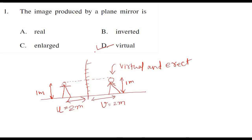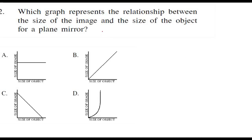Let us move on to the next question. Which graph represents the relationship between the size of the image and the size of the object for a plane mirror? The word 'size' here means height of the image, not volume. In a plane mirror, the height of the image and height of the object are the same.